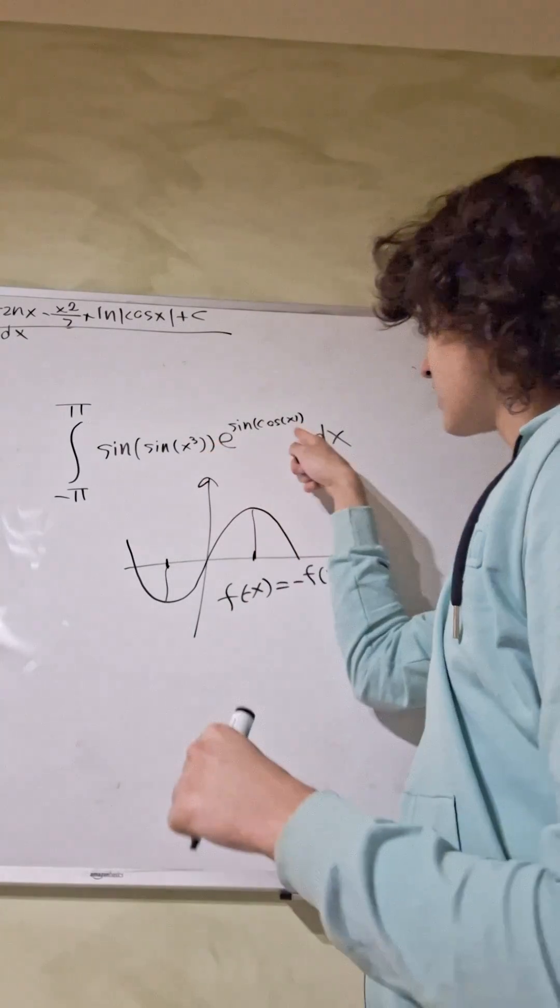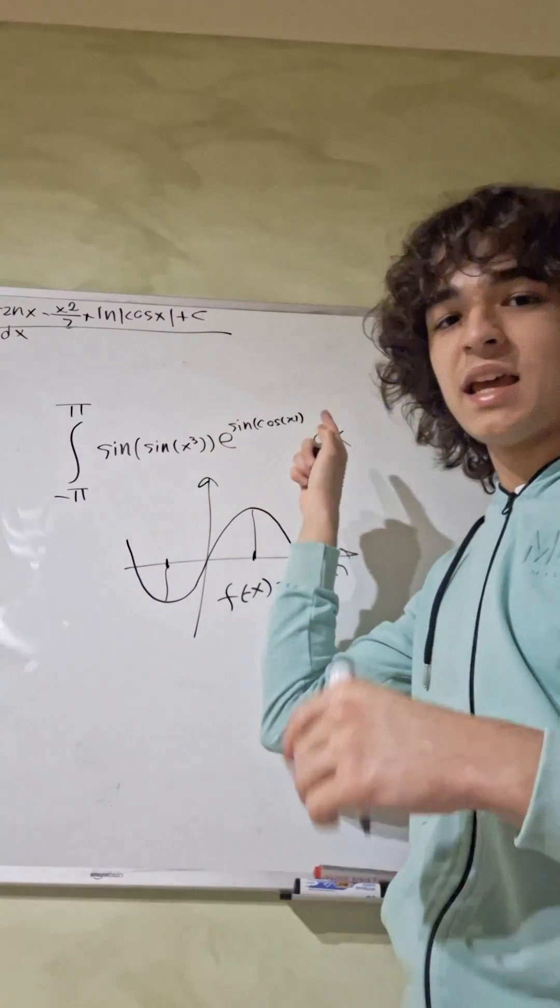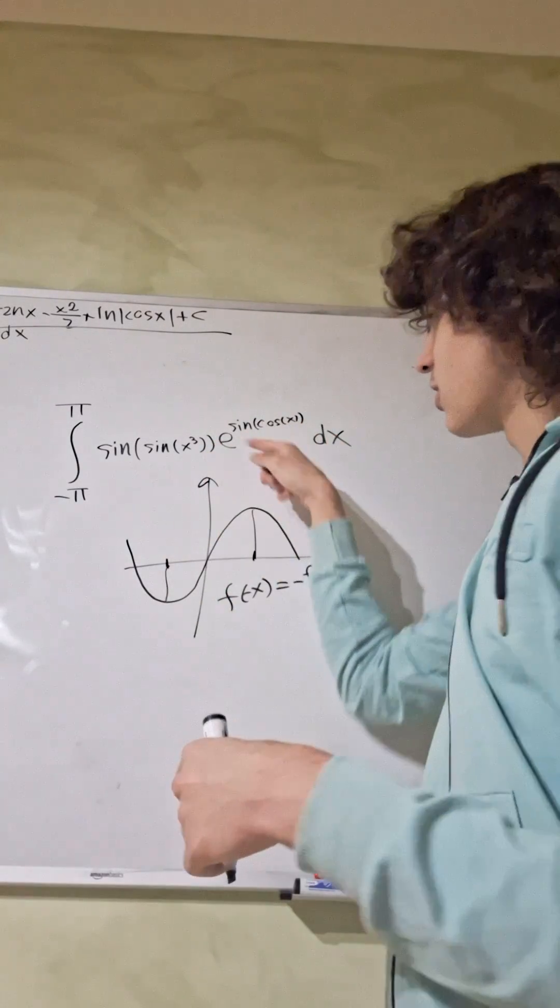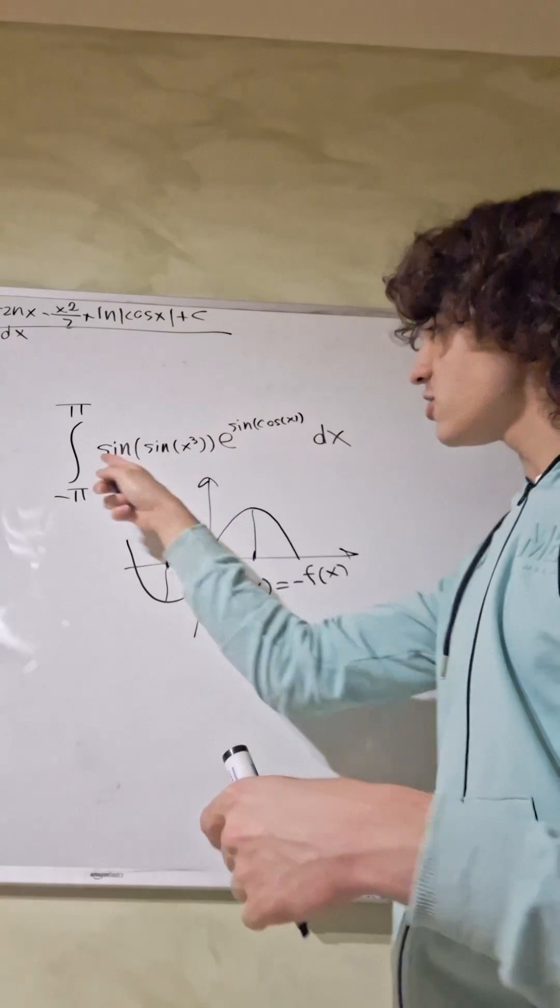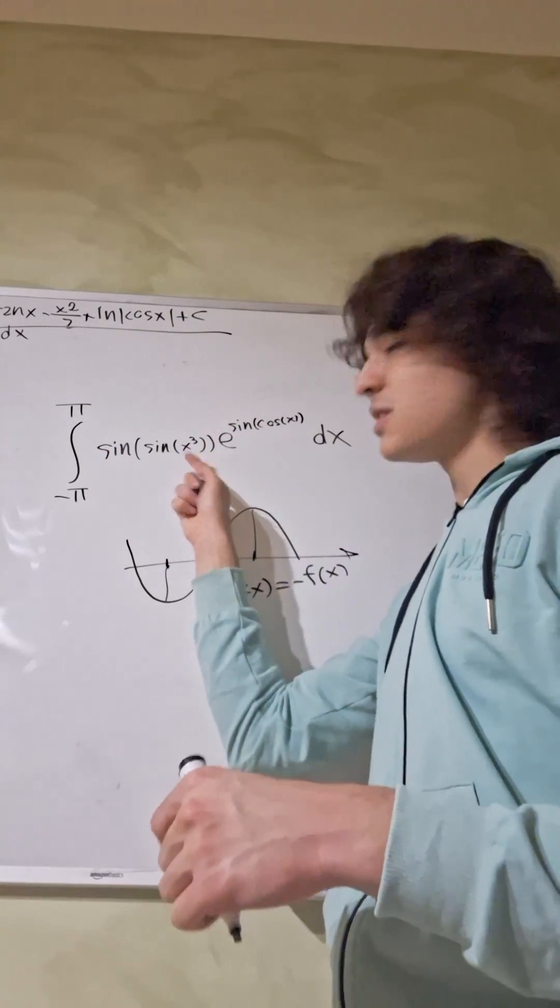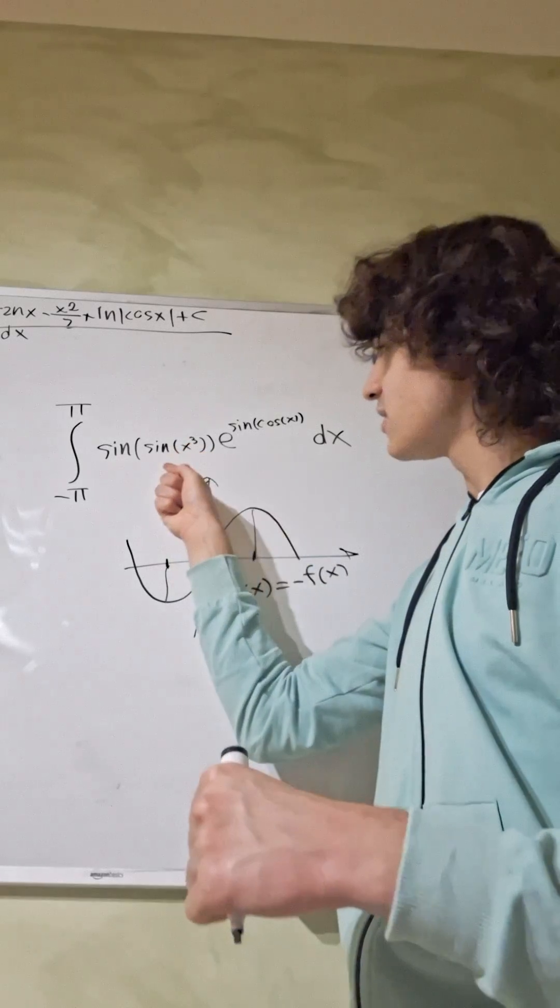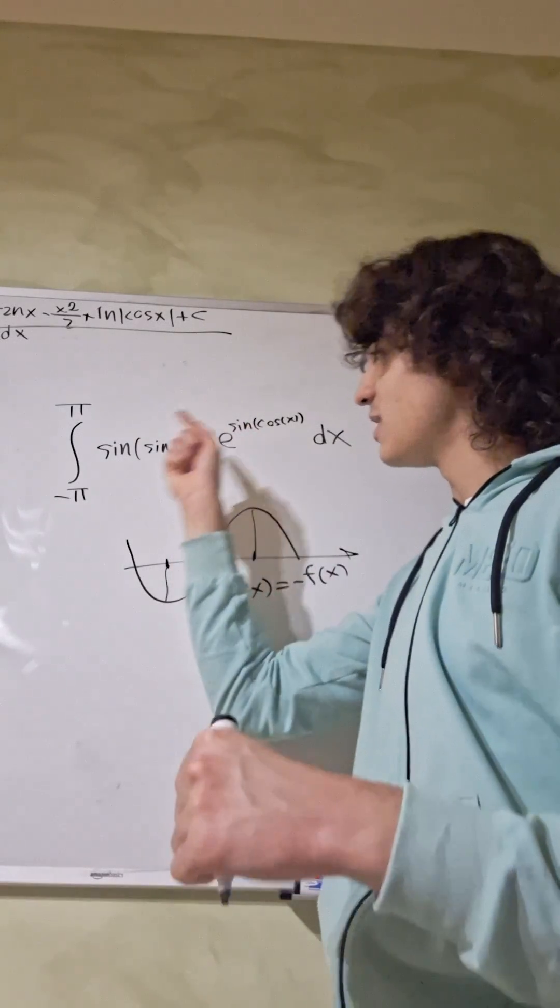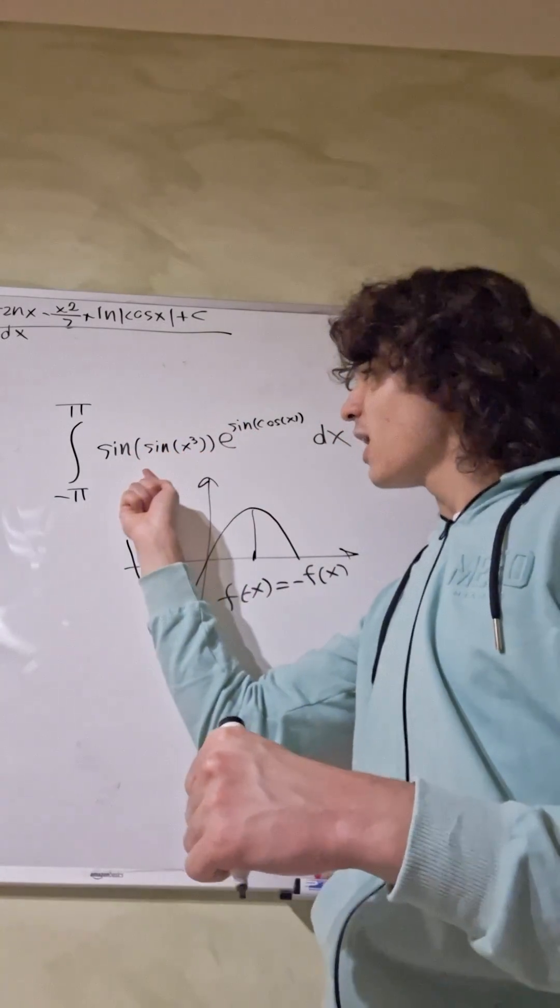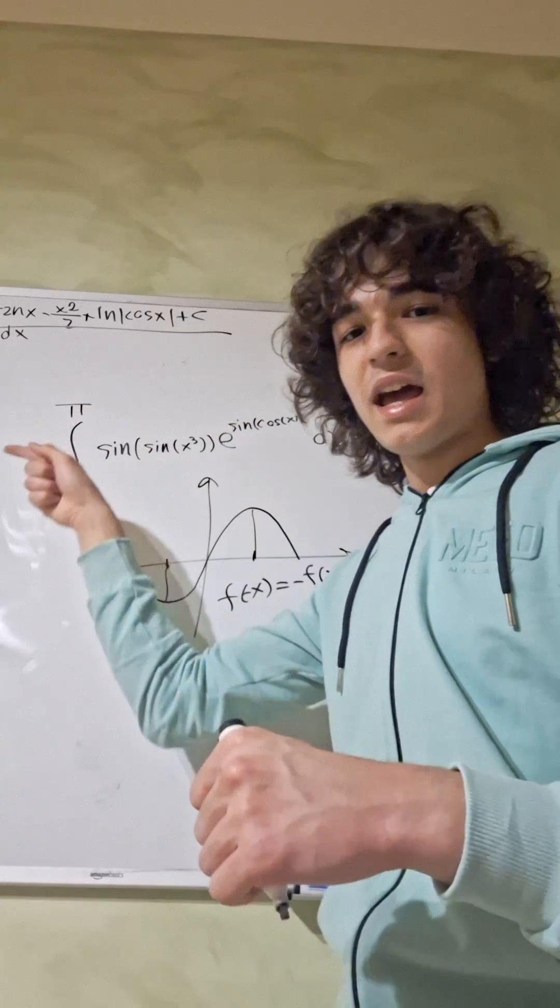So if we put minus x here, cosine of minus x is cosine of x, so this remains unchanged, whereas this part minus x cubed is minus x cubed, and sine of minus x cubed is minus sine of x cubed, and we can also bring the minus outside.